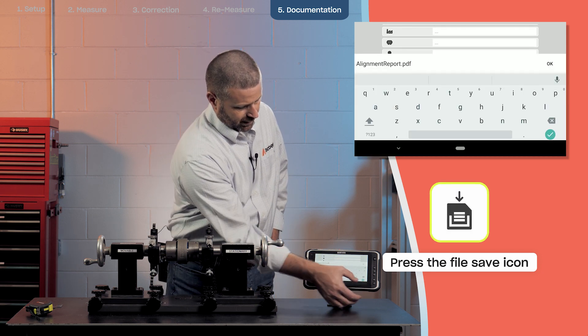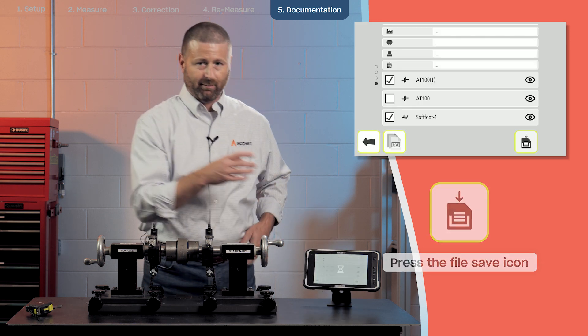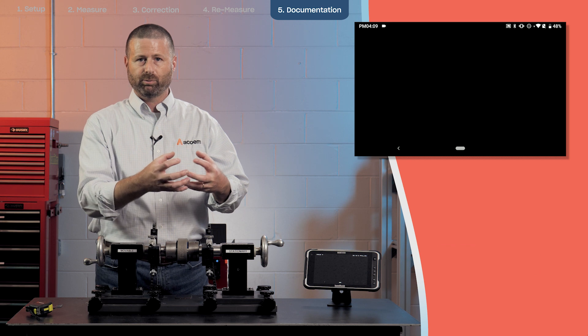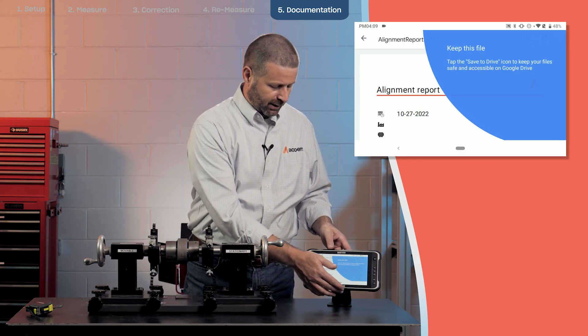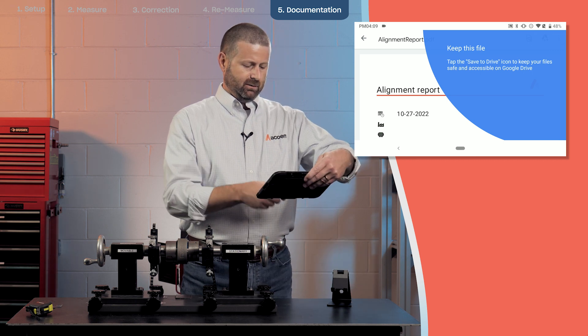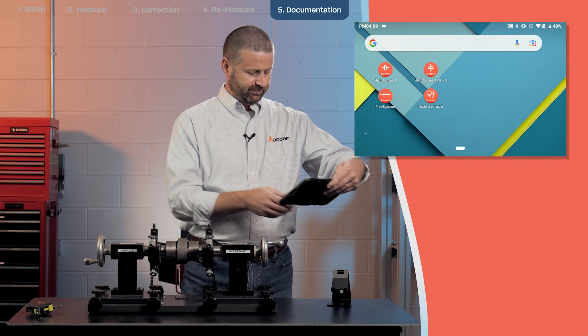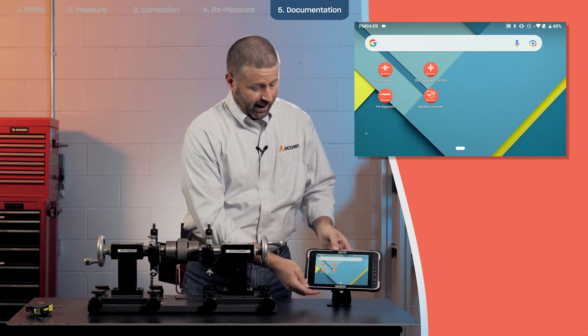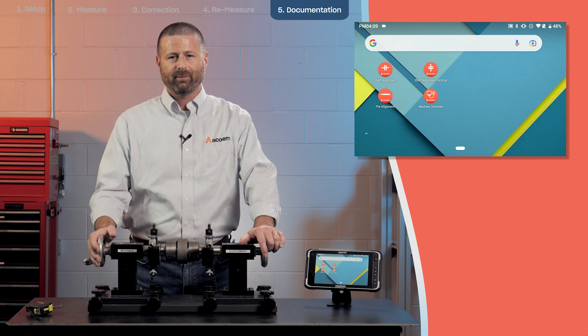This creates the PDF report, which is a combination of those two reports put into one. Now we have that file saved for future reference on this device. That completes the shaft alignment process with the ACOEM AT 100.